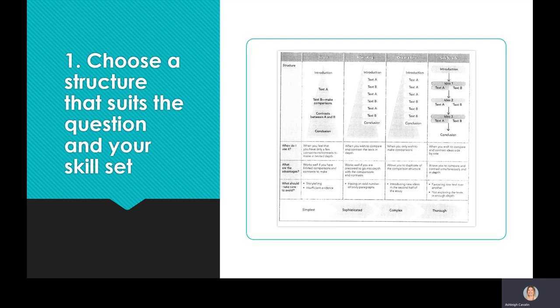Tip number one: you should choose a structure that suits the question and your skill set. Most of you will have learned across year 11 and year 12 a couple of different ways of writing a comparative essay. They're explored here in the table. My favorite one is the side-by-side comparison where you look at the key idea and include evidence from text A and text B. This requires you to have three clearly different ideas and multiple examples from text A and text B in every paragraph.